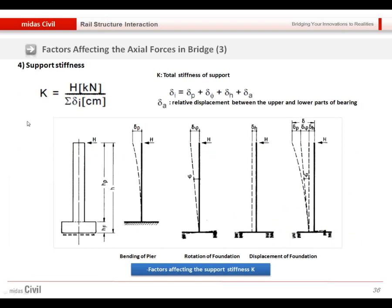The other factor will be the support stiffness. And as I showed you, we can model the pier using the beam element in the wizard, or we can even enter the support stiffness directly using the point-spring support.